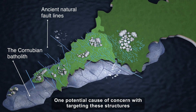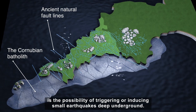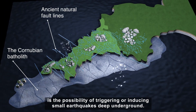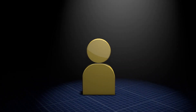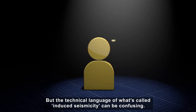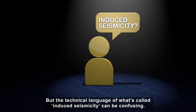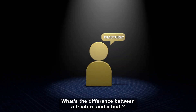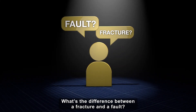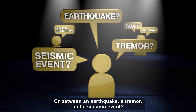One potential cause of concern with targeting these structures is the possibility of triggering or inducing small earthquakes deep underground. But the technical language of what's called induced seismicity can be confusing. What's the difference between a fracture and a fault? Or between an earthquake, a tremor and a seismic event?